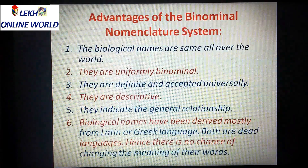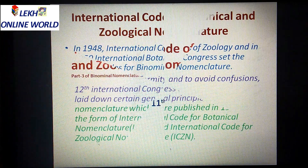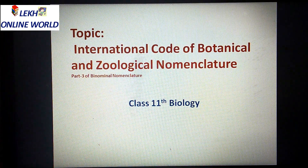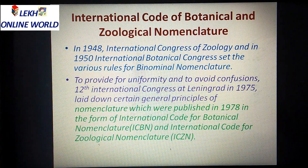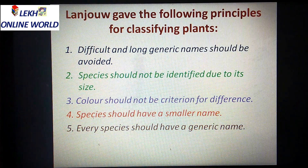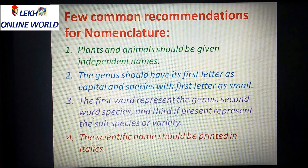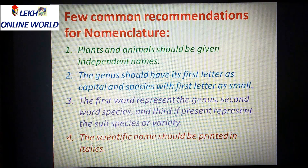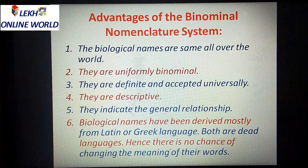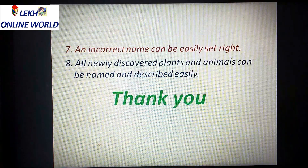These were the advantages of the system. In this video we studied the International Code of Botanical and Zoological Nomenclature — its historical background, then Lenzao's principles for plant nomenclature, then the recommendations for nomenclature, and finally the advantages of the binomial nomenclature system. That's all in this video, thank you.